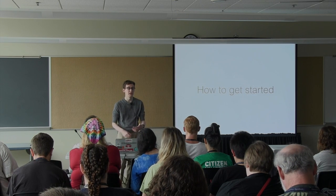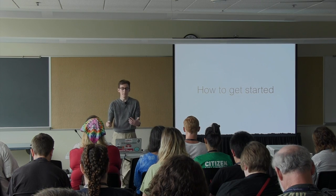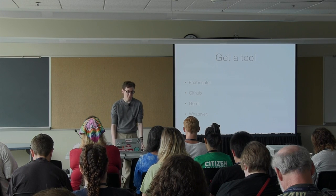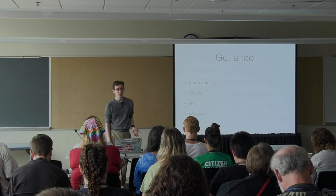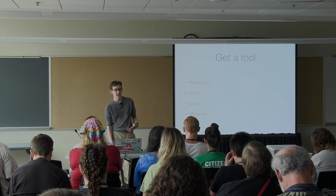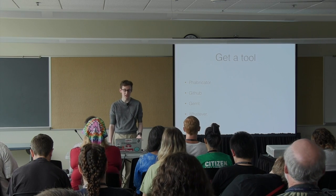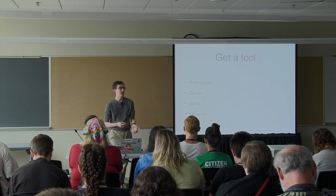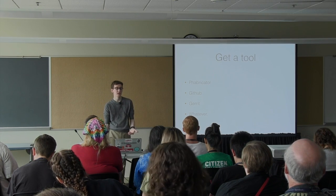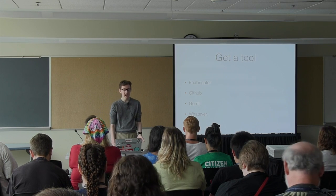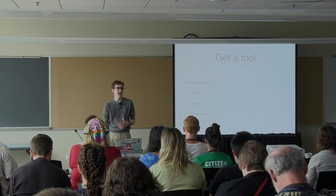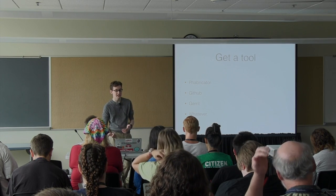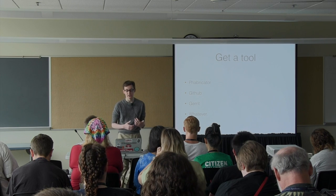Now for the practicalities — how do you dive into this? First, the most important thing to do is get a tool to help you out. Fabricator, GitHub, and Gerrit are the tools I've used professionally and in open source. There are tons of other tools out there — get whichever one makes your team happy. The important things the tool should do: keep track of the history of patches, let you leave inline comments on specific lines of code. As long as the tool really facilitates easy feedback and ease of acting on the feedback.